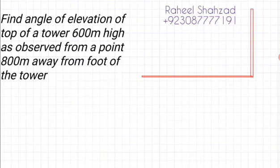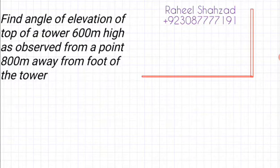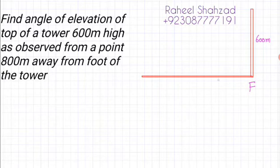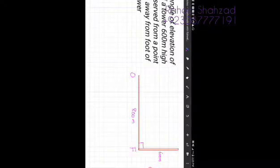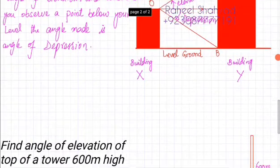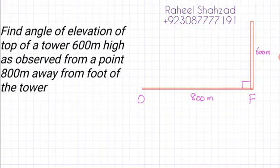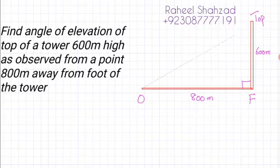Let's solve an example related to angle of elevation and depression. The question is: find the angle of elevation of the top of a tower 600 meters high as observed from a point 800 meters away from the foot of the tower. Let's assume this is the tower with height 600 meters. This is the foot of the tower, and this is the point of observation, 800 meters away from the foot.